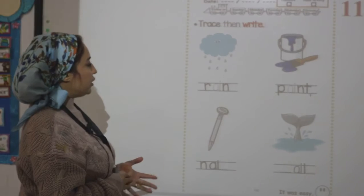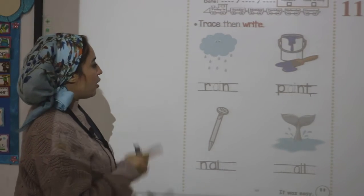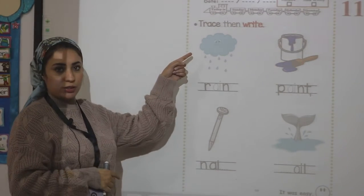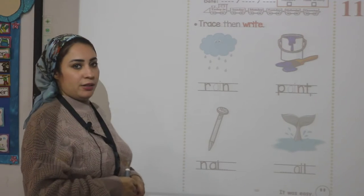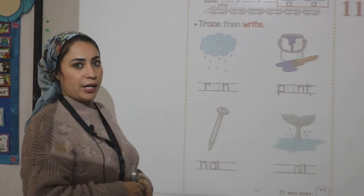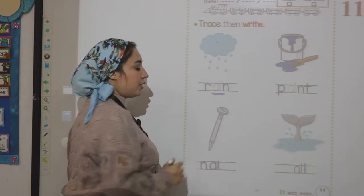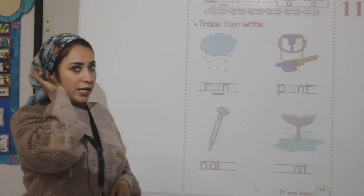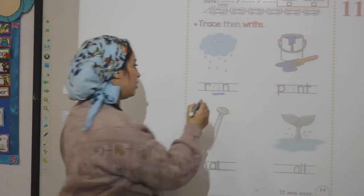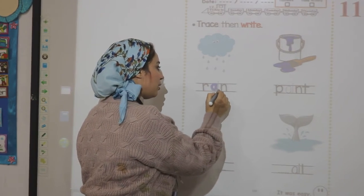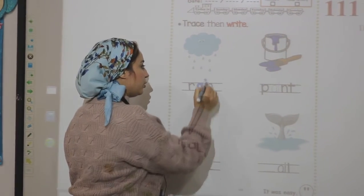Look at this picture. We are going to trace, then write. What is the picture? Rain. So what is the middle sound here? A. Semi-circle up and down, down stick and dot.